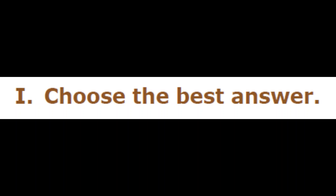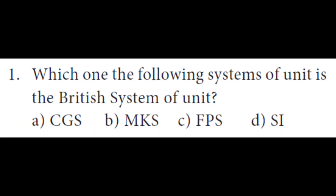We have to find the answers for the following questions. The first one is: which one of the following systems of unit is the British system of unit? We have four answers — A: CGS, B: MKS, C: FPS, D: SI. Out of these four we have to choose which one is correct.